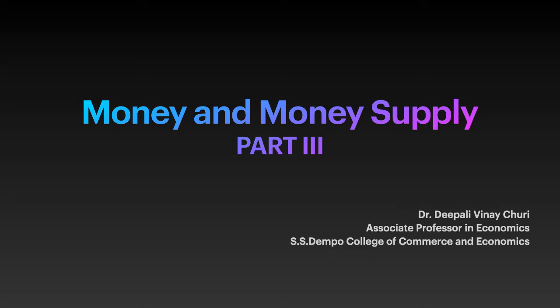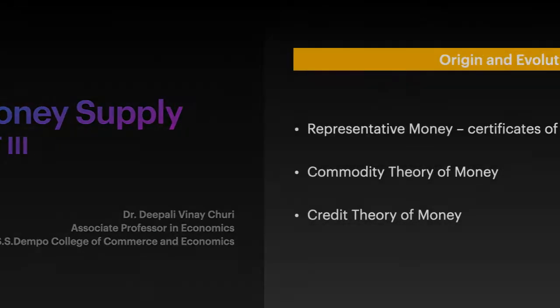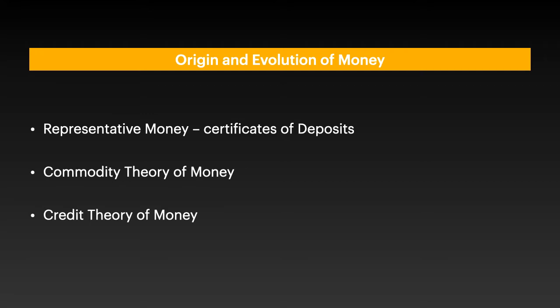Part 3 of the unit on money and money supply will discuss the origin and evolution of money. It tells the story of how money has evolved from its earliest form to its present form — quite an interesting journey to understand how money took different forms to become what we use today.